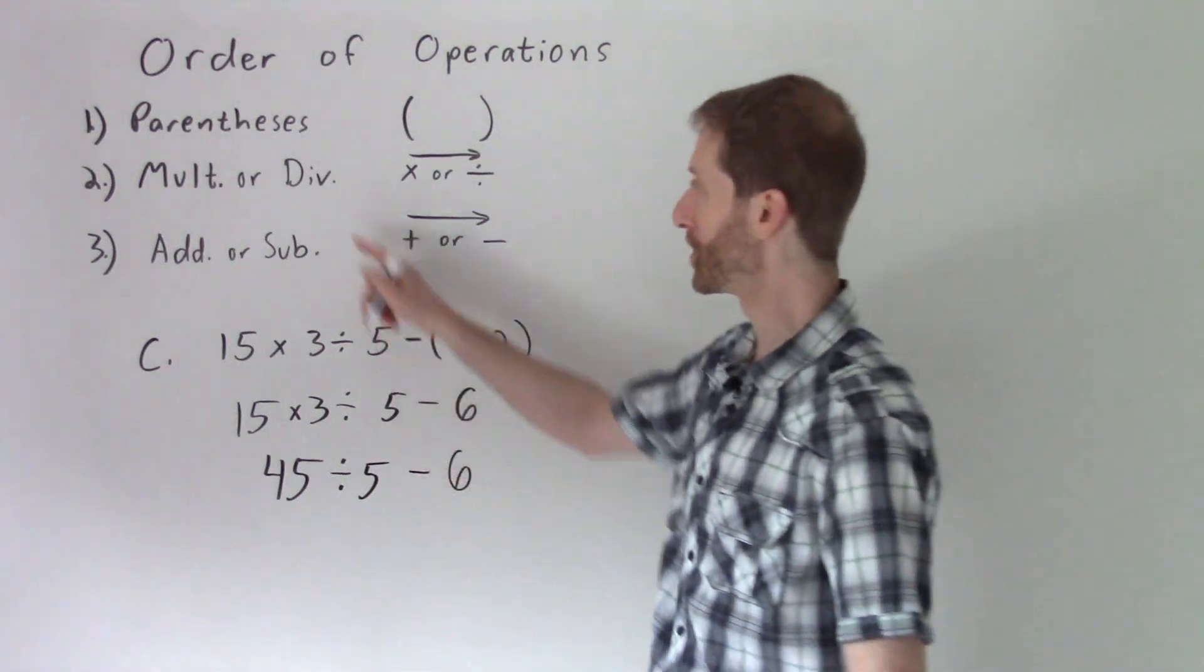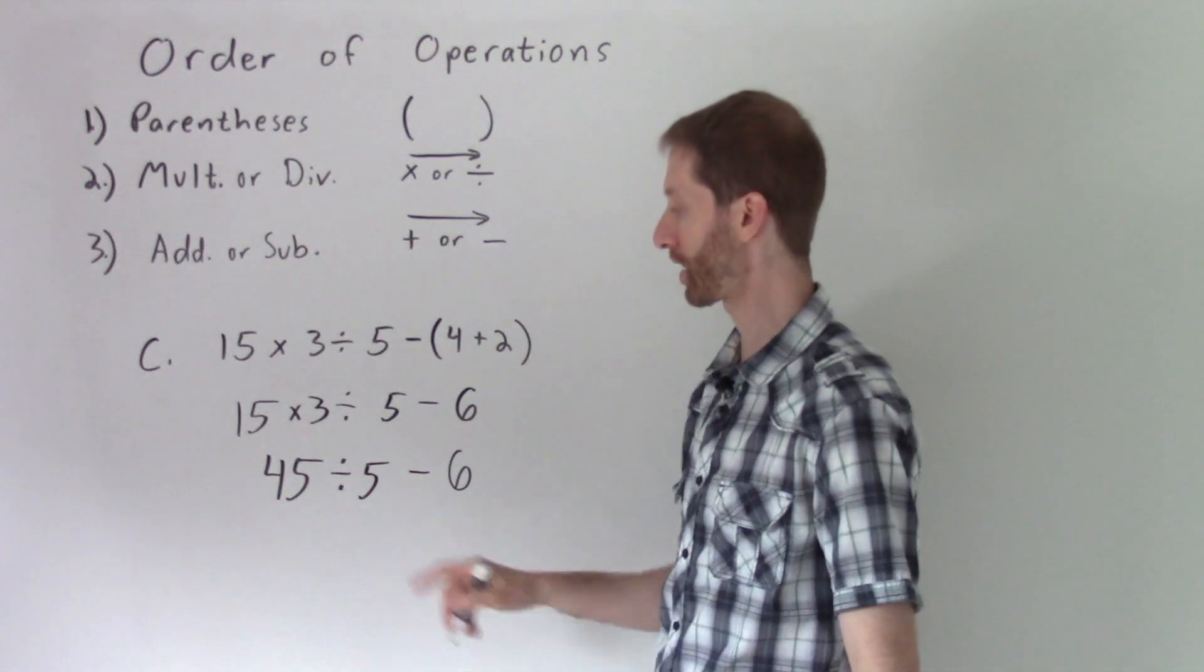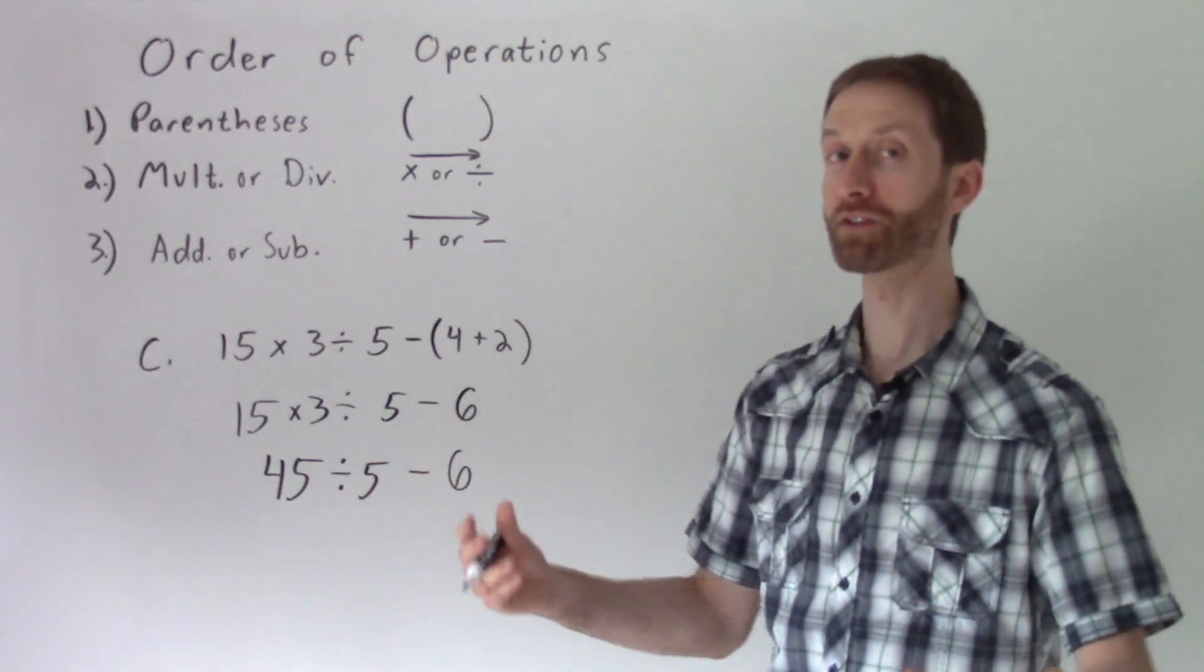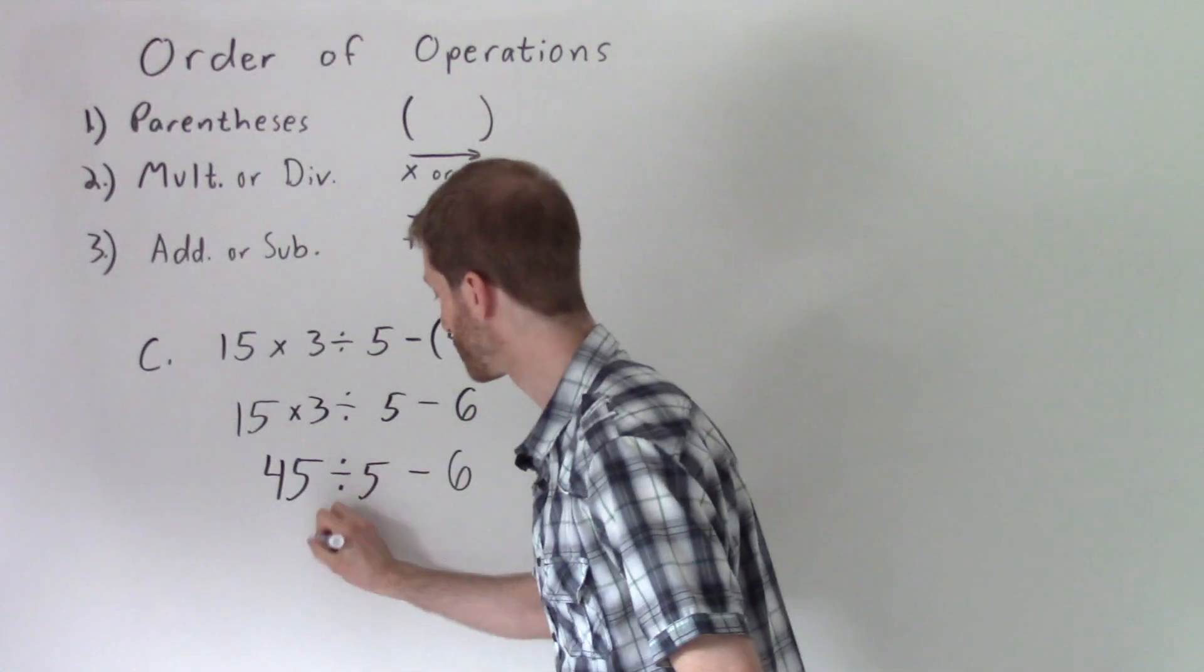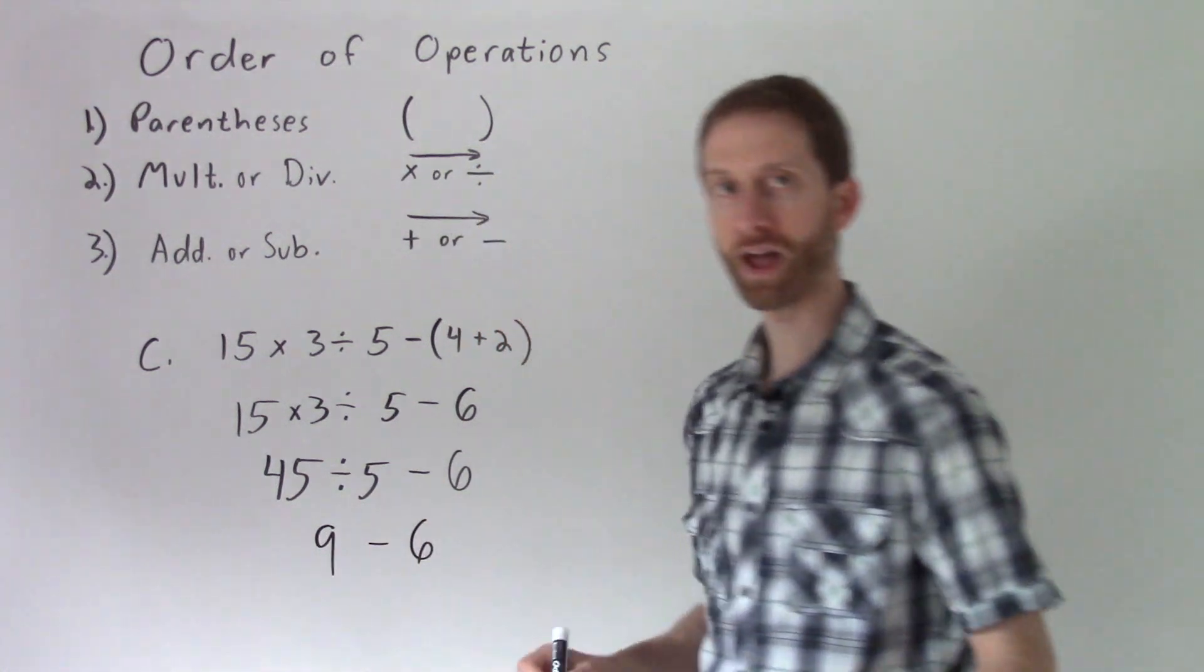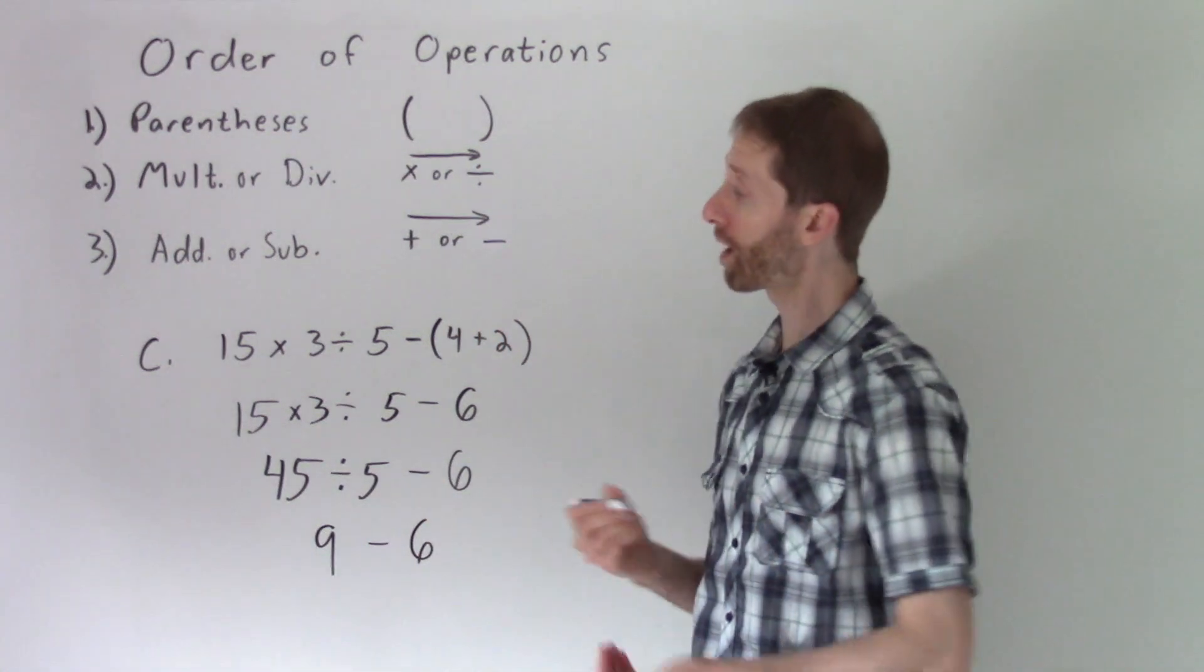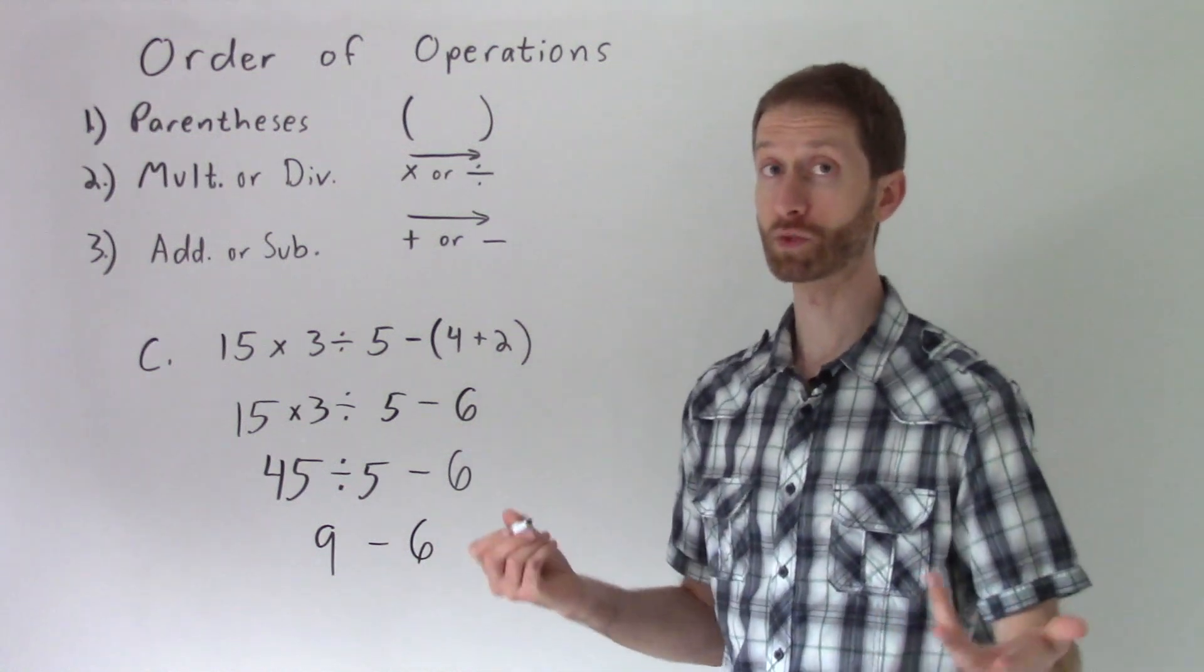Now we still have division, which we know comes before addition or subtraction. 45 divided by 5 is 9. Then you have one more operation left, 9 minus 6, which is 3.